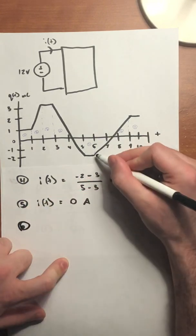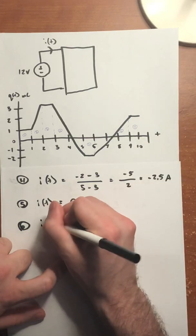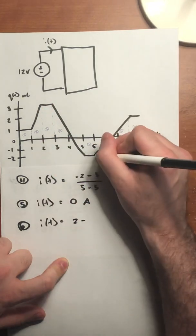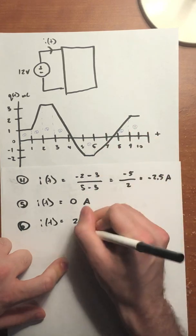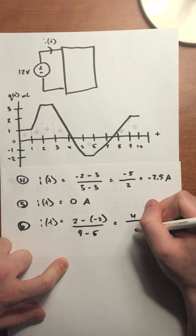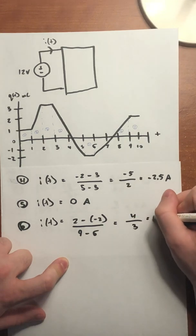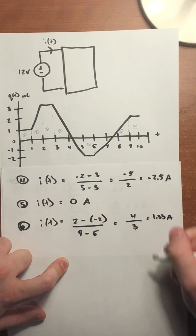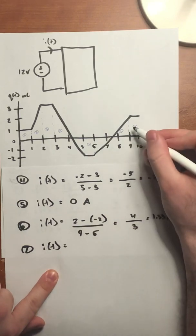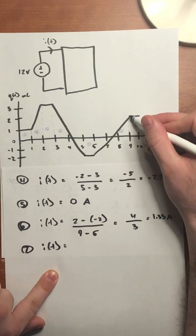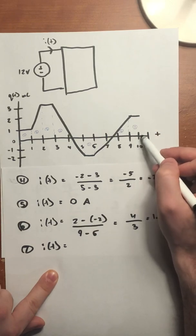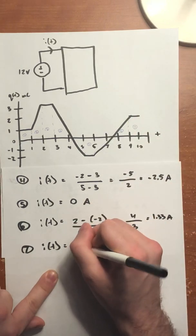For section 6, there is a change between 6 and 9 milliseconds. We take the final value of 2 minus negative 2, divided by 9 minus 6. That gives us 4 divided by 3, which is approximately 1.33 amps. For section 7, between 9 and 10 milliseconds, there's no change in the y-axis, so the current is 0 amps.